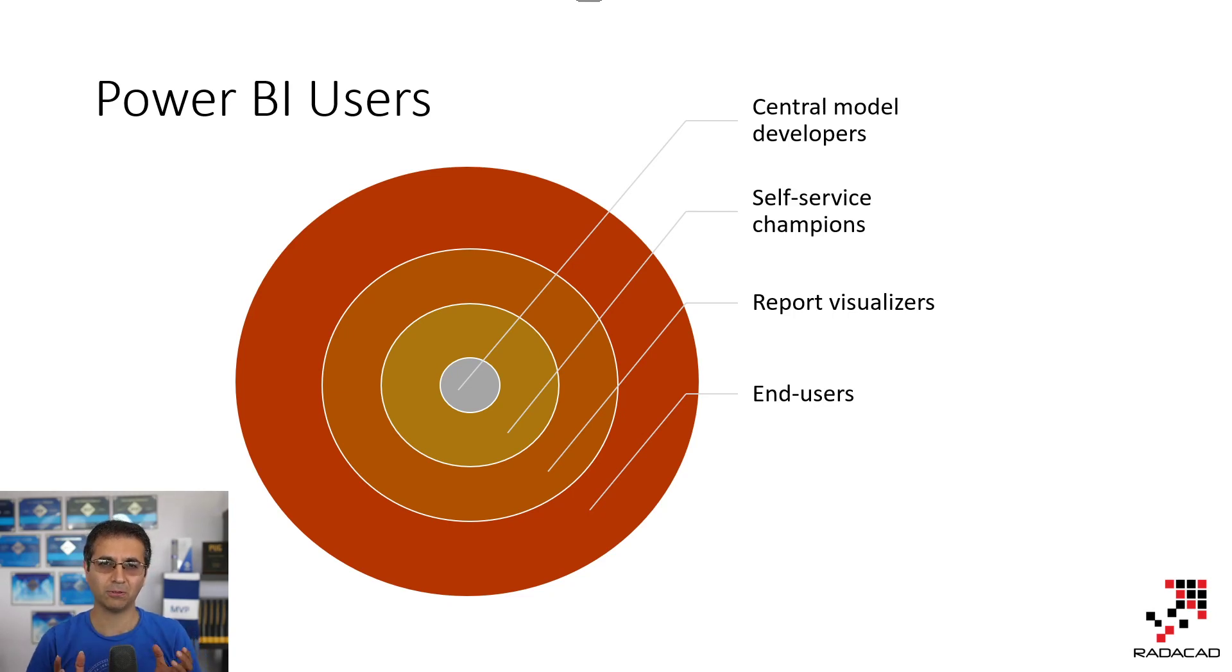And then you have the central core developers who are actually building the reports and models that everyone else is using. End users and also main source for self-service champions and report visualizers. This is like one assembly of layers in an organization. Every organization might be different.